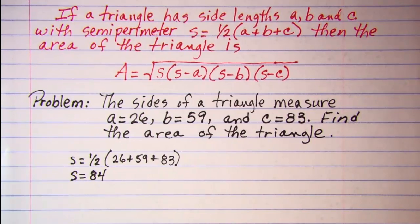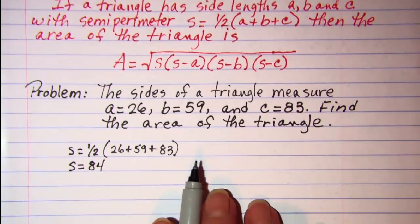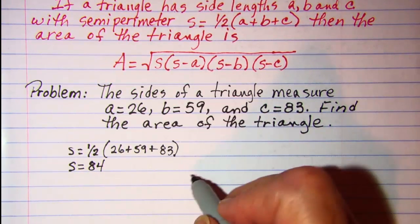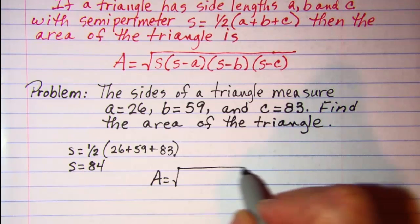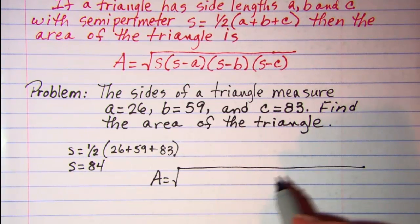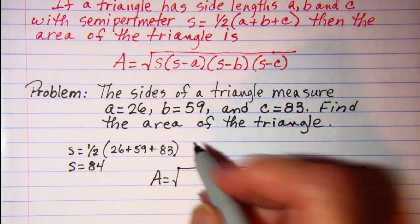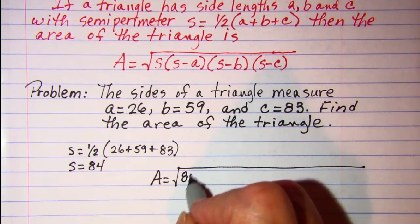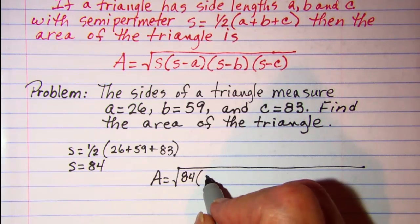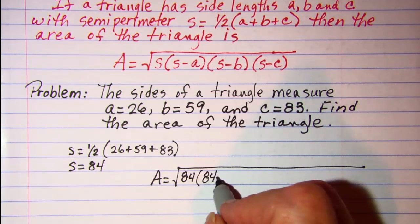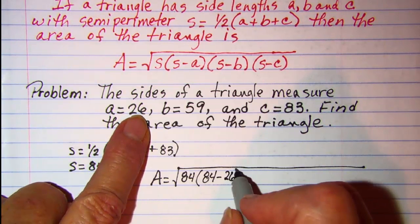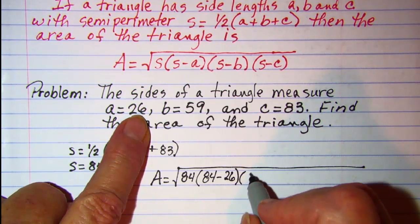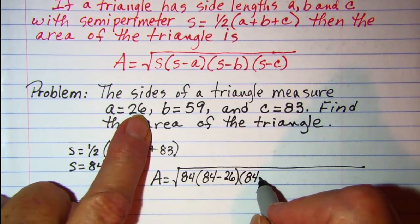Now it's just a matter of plugging our numbers in. Our area is going to be the square root of S times 84 minus A times 84 minus B.